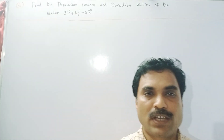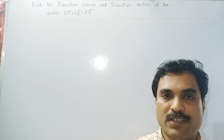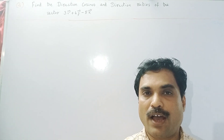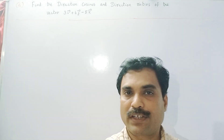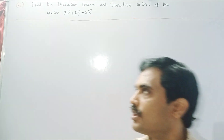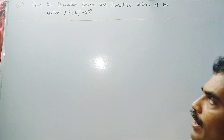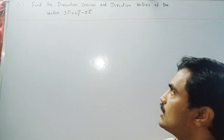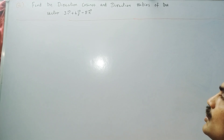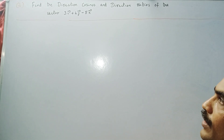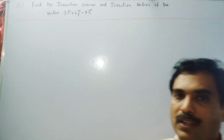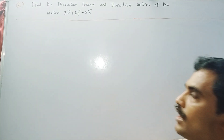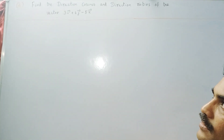Hi, welcome to my channel Yanam Takshashila. In this new video I am going to solve a mathematical problem under vector introduction. The problem is: find the direction cosines and direction ratios of the vector 3i bar plus 4j bar minus 5k bar. What they are given is the vector, and what they are asking us to find is the direction cosines and direction ratios.